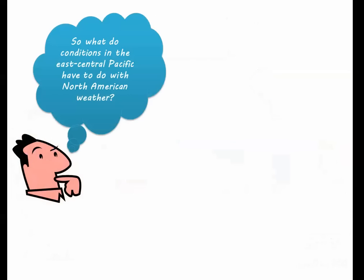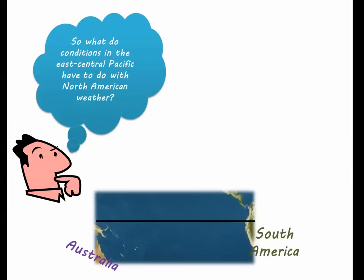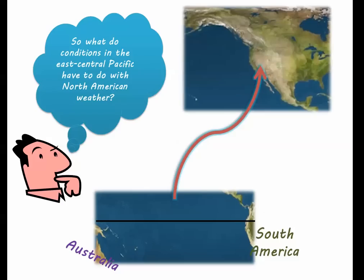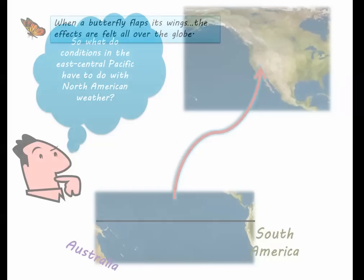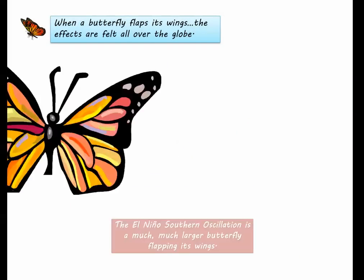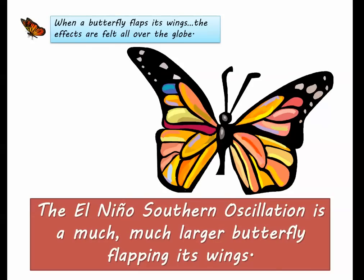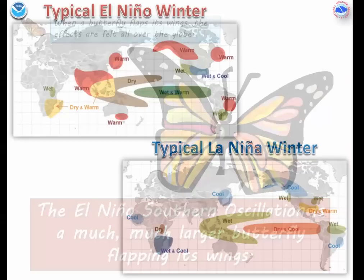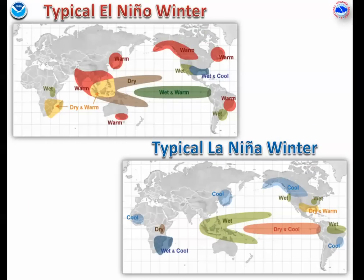So now maybe you are thinking, what does all this about the jet stream and sea surface temperatures in the Pacific have to do with weather conditions here in North America? Well, think of the old adage about when a butterfly flaps its wings halfway around the globe, we feel the effects here. Think of ENSO as a much, much larger butterfly flapping its wings. When the jet stream over such a large area, like the equatorial Pacific, shifts, the effects of that shift are felt globally.